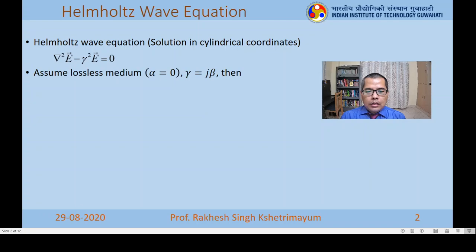We can simplify the Helmholtz wave equation when we consider a lossless medium. In a lossless medium, alpha — the real part of gamma — is zero, so gamma simply becomes j·beta. The equation then simplifies to: Laplacian of electric field plus beta squared times E equals zero, where E is the electric field and beta is the phase constant.